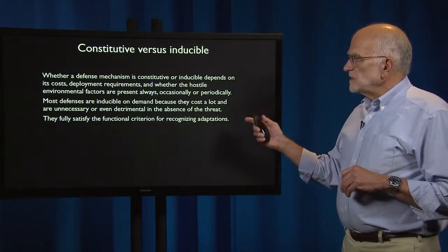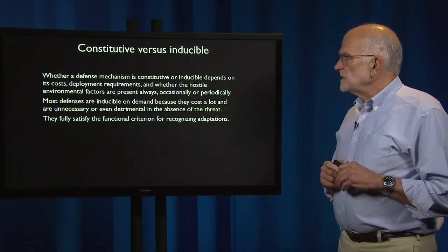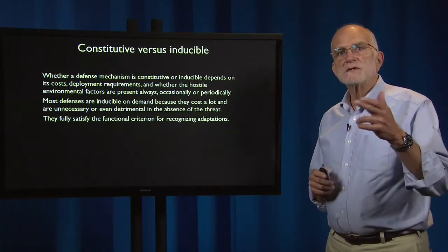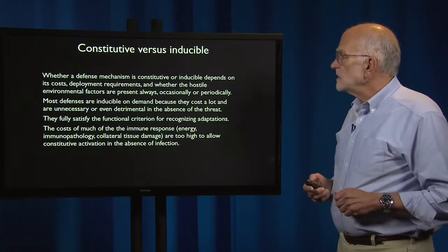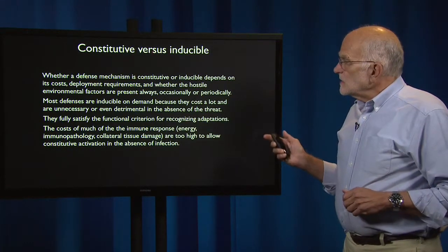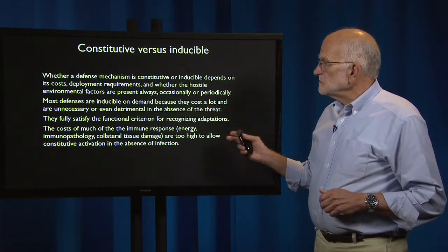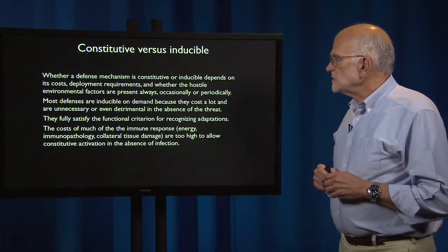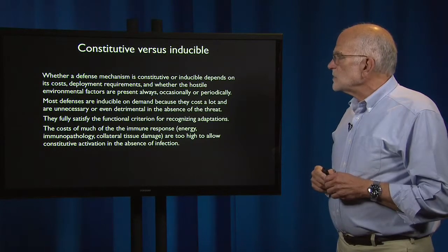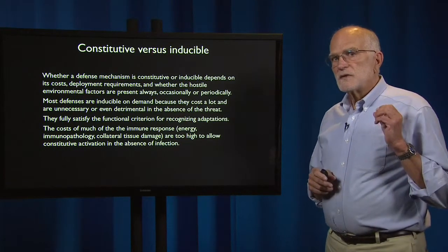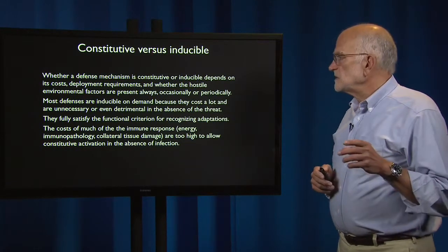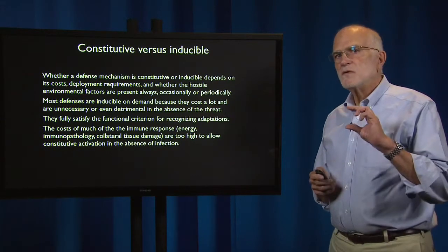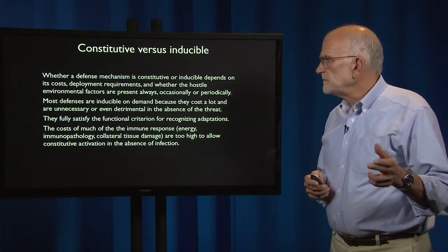They fully satisfy the functional criterion for recognizing adaptations discussed in the first lectures. The cost of much of the immune system — energy, immunopathology, collateral tissue damage — are too high to allow constitutive activation in the absence of infection. This is something that you only want to turn on when you need it.